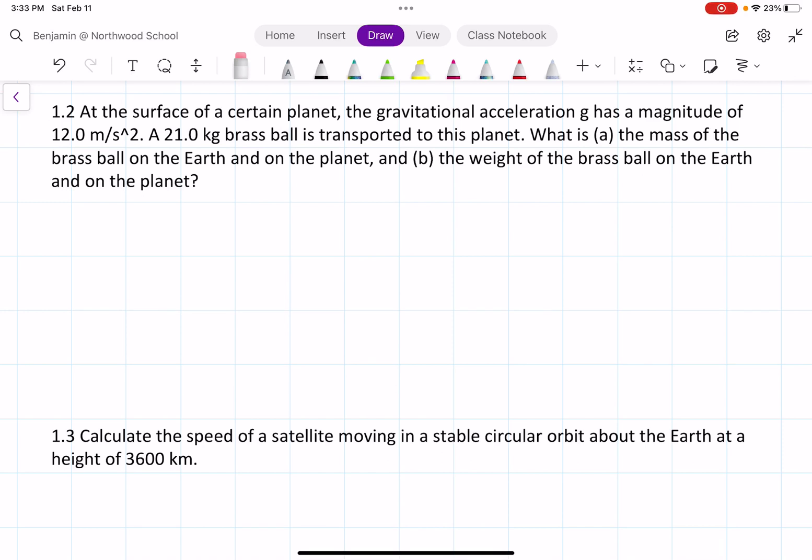For this problem, it says at the surface of a certain planet, the gravitational acceleration g has a magnitude of 12 meters per second squared. A 21 kilogram brass ball is transported to this planet. What is A, the mass of the brass ball on the Earth and on the planet, and B, the weight of the brass ball on the Earth and on the planet?